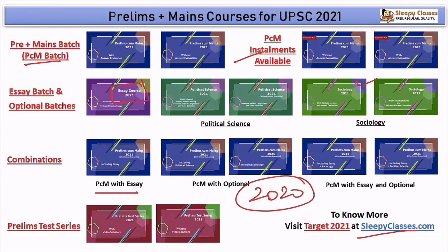For the 2020 attempt, we have also started an answer writing course — today being Monday was the first day. You will write 24 main-type answers in this course. Details are available on our website. All our courses are very nominally priced, so we request you to support our effort and purchase the course that appeals to you the most. Thank you.